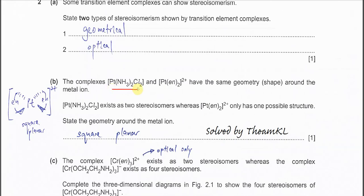Part b: the complexes here are cisplatin and transplatin, which have square planar geometry. All of you should know by now that platin always has a square planar structure. Now we have platinum with two en ligands, which has similar geometry to platin.